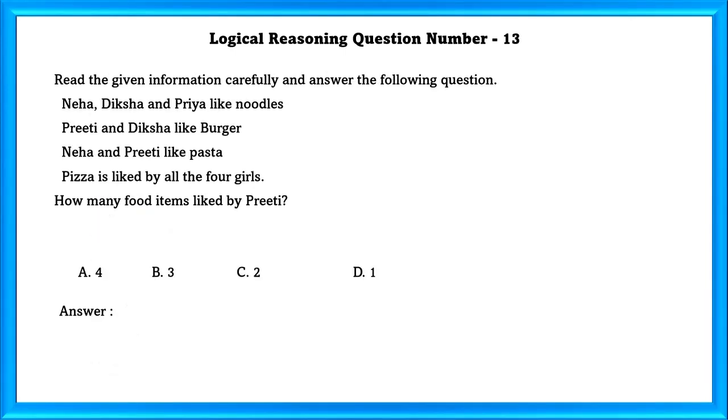Logical Reasoning Question Number 13: Read the given information carefully and answer the following question. Neha, Diksha, and Priya like noodles. Preeti and Diksha like burger. Neha and Preeti like pasta. Pizza is liked by all four girls. How many food items are liked by Preeti? Preeti likes burger, pasta, and pizza. So our answer is 3.